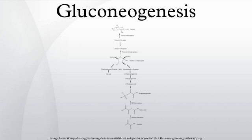Lactate is transported back to the liver where it is converted into pyruvate by the Cori cycle using the enzyme lactate dehydrogenase. Pyruvate, the first designated substrate of the gluconeogenic pathway, can then be used to generate glucose. Transamination or deamination of amino acids facilitates entering of their carbon skeleton into the cycle directly, or indirectly via the citric acid cycle.